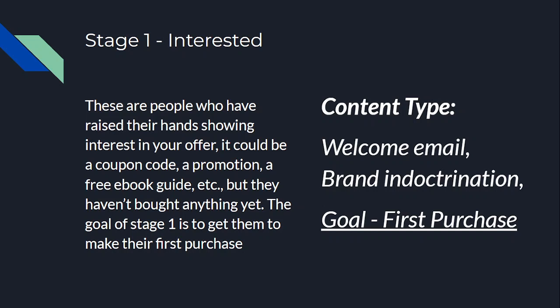The goal of stage one is to get them to make a purchase. The different kinds of emails you can push out include a welcome email and brand indoctrination — where you tell them a bit about your brand, why they should buy from you, what they stand for, and the history of your business. You don't go into too much in-depth detail, just one or two things about why you're unique and what your brand stands for. The goal of stage one emails is to get people to make their first purchase.